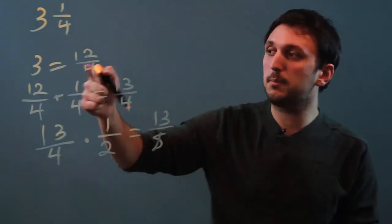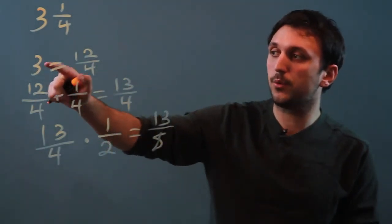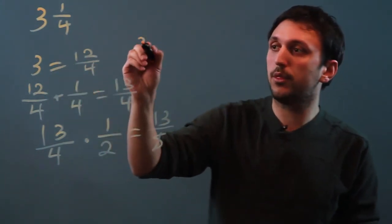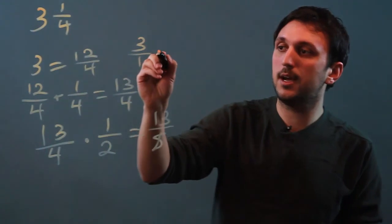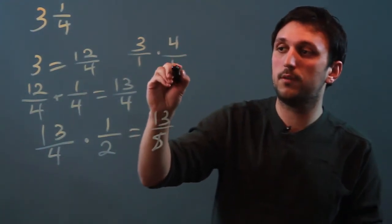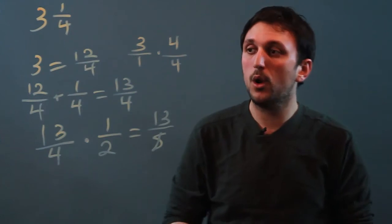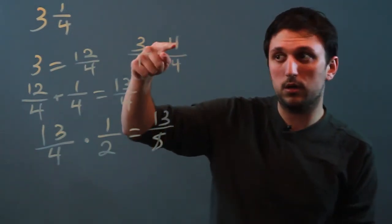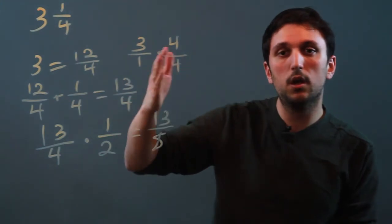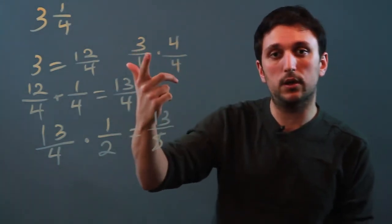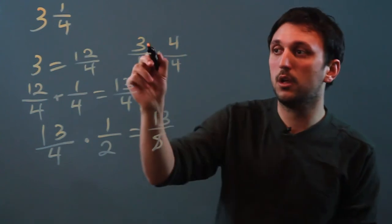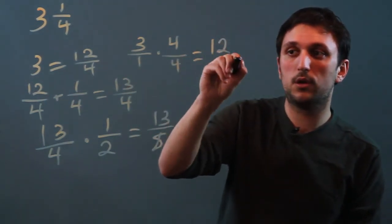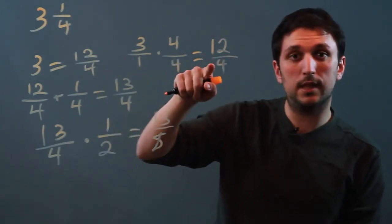Now, one step that people might get confused on is when 3 equals 12 fourths. You may want to say, okay, well, how do I do that? You say 3 over 1 times 4 over 4. This is called rationalizing a number, where we give it the denominator we want by multiplying by 1, because 4 over 4 is just 1. So we don't change the value, but we do change how it looks — that's called changing the expression. So 3 over 1 times 4 over 4 is 12 over 4. That's an alternate way of doing that step.